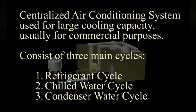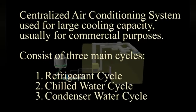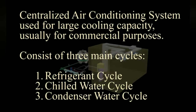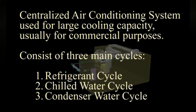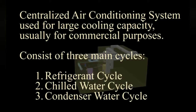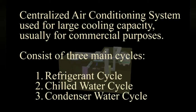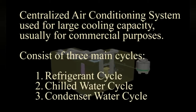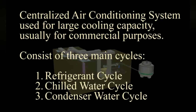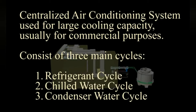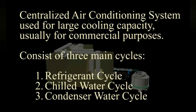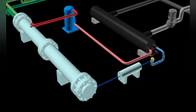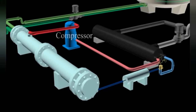A centralized air conditioning system is used for large cooling capacity, usually for commercial purposes. The chiller system consists of three main cycles: refrigerant cycle, chilled water cycle, and condenser water cycle. The components involved in the refrigerant cycle are compressor, condenser, filter dryer, expansion valve, and evaporator.